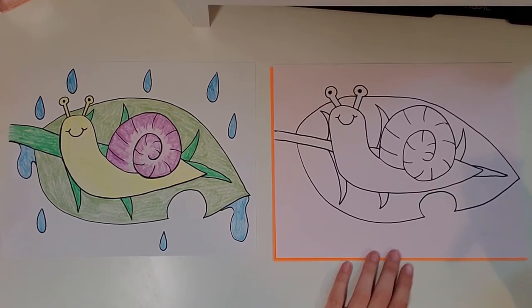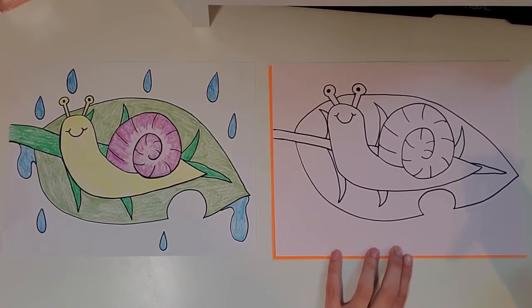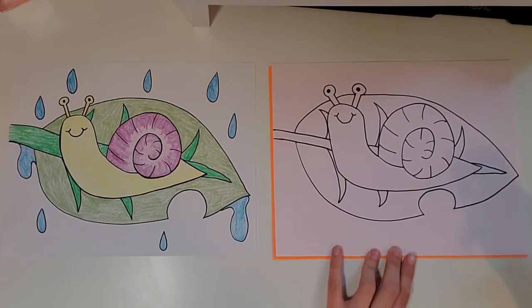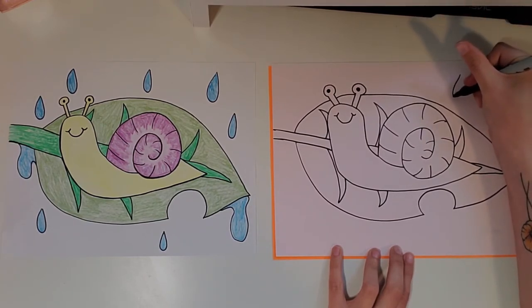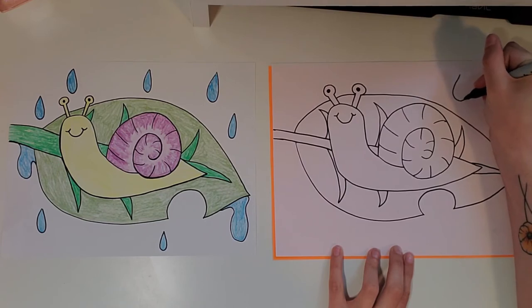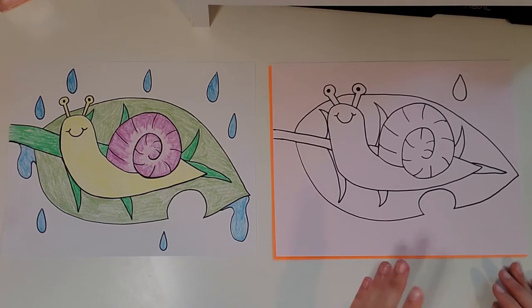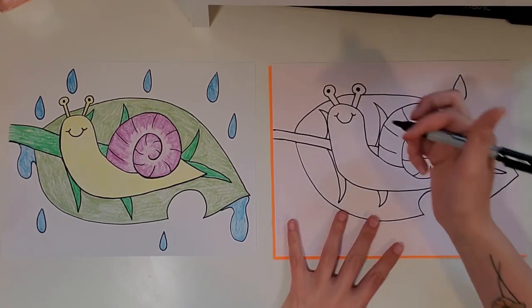We're actually almost done with the whole drawing. All we have left are our raindrops. So I'll show you two ways to draw the raindrop. Usually I draw them all in one go. I start with the top. I do a curve out, a curve under, and then it meets back at the top.